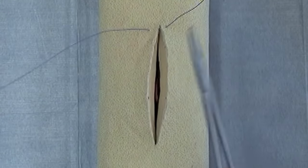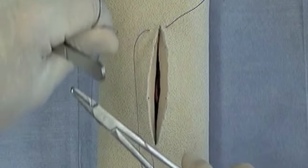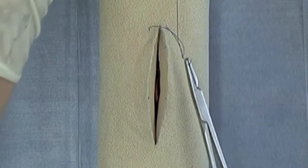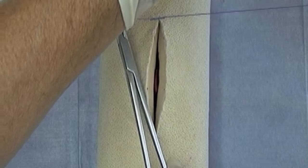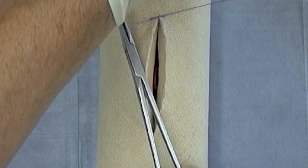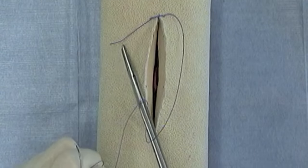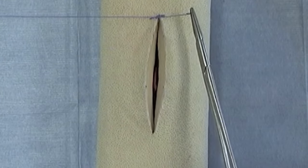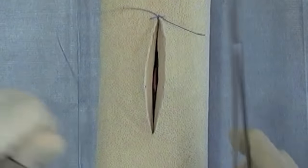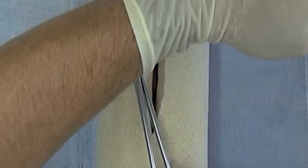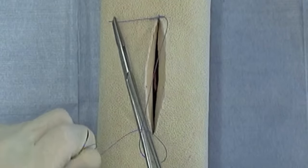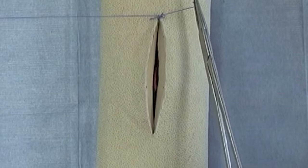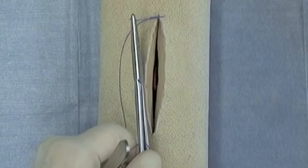Now with polyglactin 910, I don't have a lot of friction, so I'm going to use a surgeon's knot and hopefully that will be enough to maintain the tension that I want across this suture line. I put a surgeon's knot followed by two additional throws.